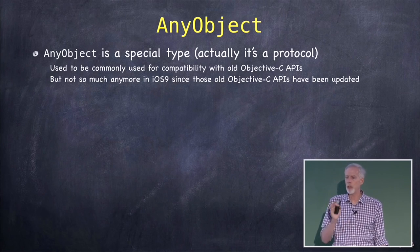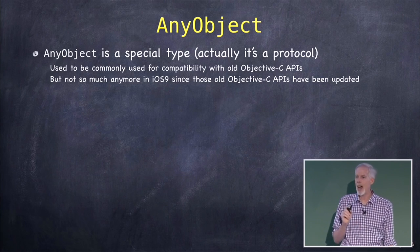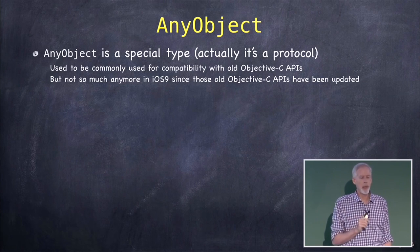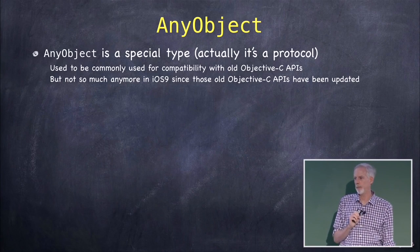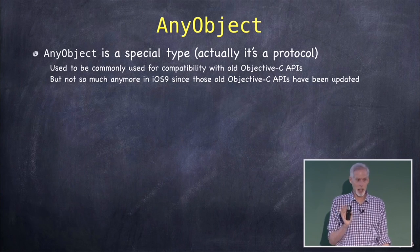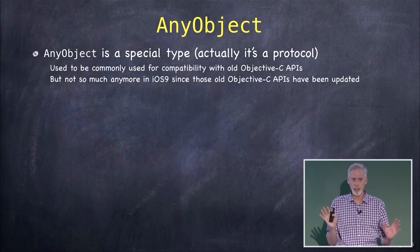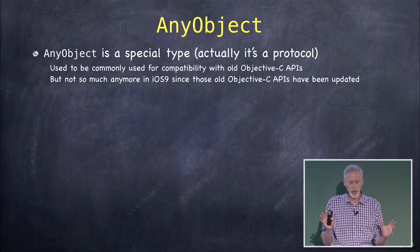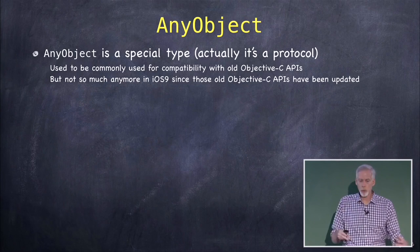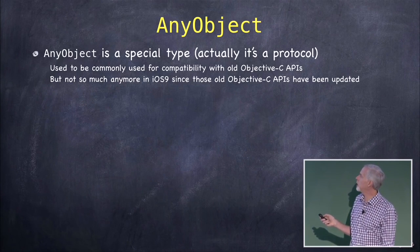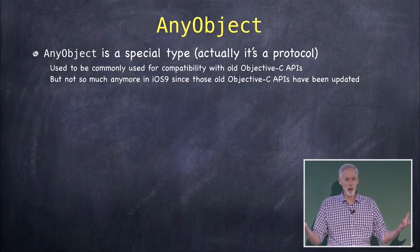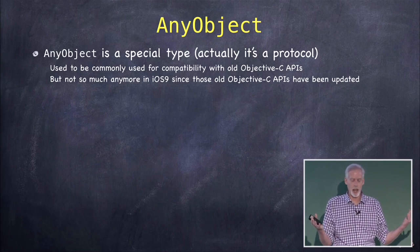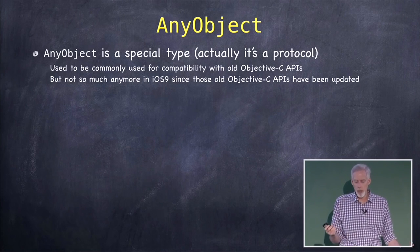Objective-C has a very important type called ID, which means pointer to an object of unknown class. That's a very open-ended type. Swift doesn't do things that way — Swift is strongly typed; it infers types, but it's strongly typed.